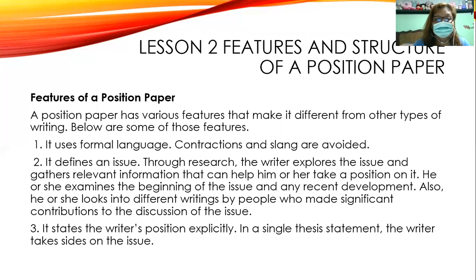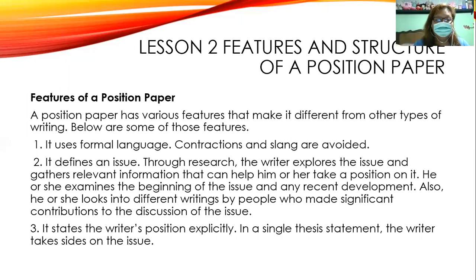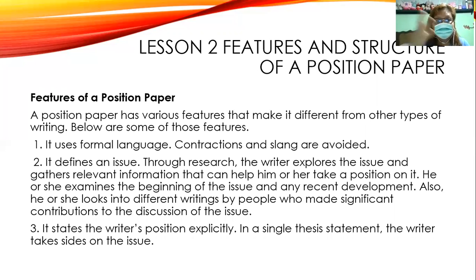These are the features of a position paper. Because you are now familiar with the purpose and potential readers of your position paper, you also need to familiarize yourself with the guidelines on how the position paper will be written. First, it uses formal language — do not use contractual slang. Second, it defines an issue. Through research, the writer explores the issue and gathers relevant information that can help him take a position on it. As a writer, you have to examine the beginning of the issue, the developments that happened, and also look at the writings of other people and what significant contributions those writers have on the issue.